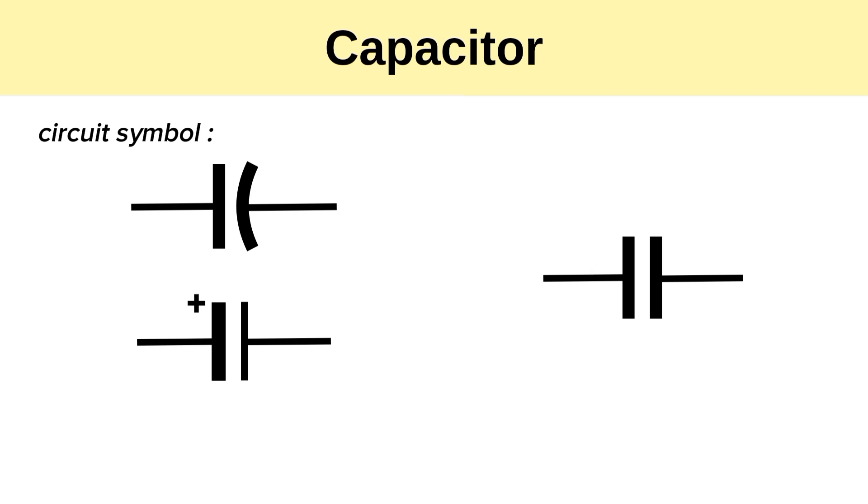The circuit symbol of a capacitor looks like this: two parallel lines, either curved or flat. A curved line indicates that the capacitor is polarized, while flat lines indicate that the capacitor is non-polarized.